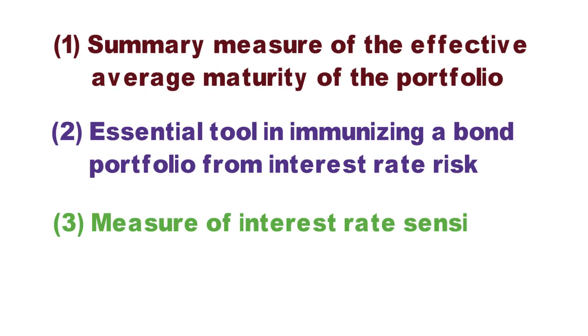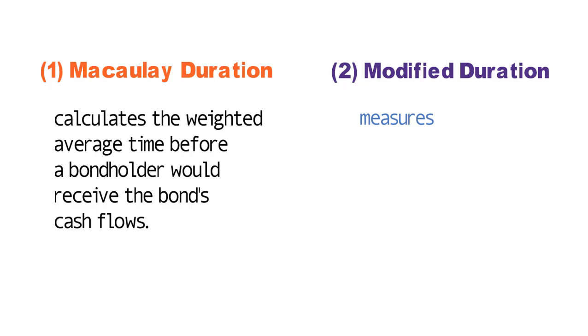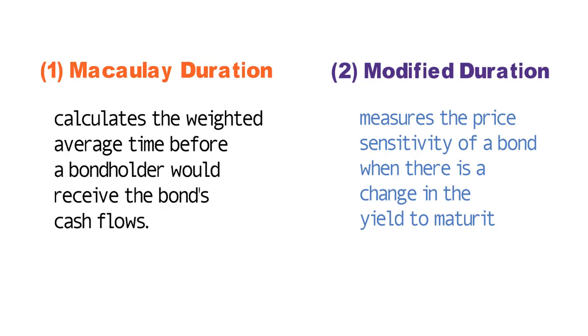There are two types of duration measures: Macaulay duration and modified duration. Macaulay duration calculates the weighted average time before a bondholder would receive the bond's cash flows. Conversely, modified duration measures the price sensitivity of a bond when there is a change in the yield to maturity.